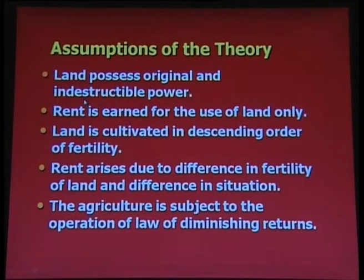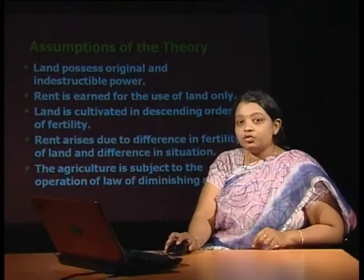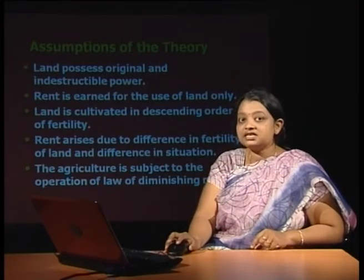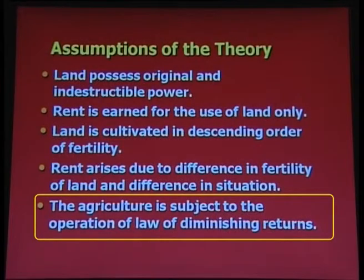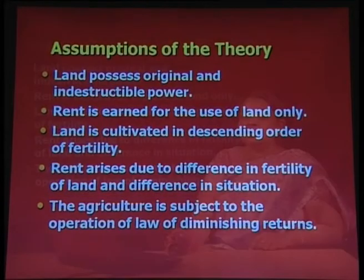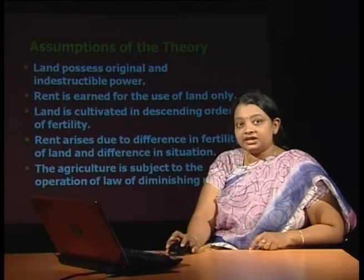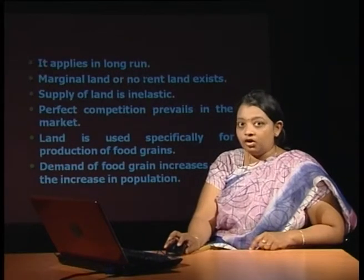From this definition, we can conclude that land possesses some original and permanent properties, and rent is paid for the use of land only. Before talking about the theory, let us see certain assumptions made by Ricardo. According to him, land possesses original and indestructible power — that means land is not perishable. Rent is earned for the use of land only, meaning other factors cannot earn rent according to Ricardo. Land is cultivated in descending order of fertility, so the most fertile land will be used first and less fertile land will be used last. Agriculture is subject to the law of diminishing returns — as factors of production increase, output decreases. It applies in the long run only.